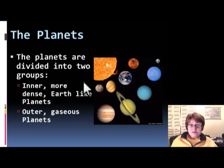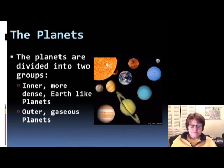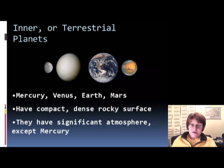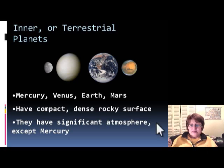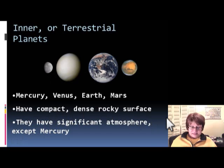We divide the planets into two major groups. One is the inner planets — those are the ones closest to the Sun. The other group is the outer planets, which are all gas planets. The inner planets are more like Earth — they have rocky surfaces and most have atmospheres. We're going to start with the inner or terrestrial planets. In order from the Sun: Mercury, Venus, Earth, and Mars — you have to know them.